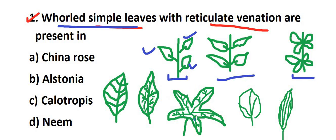Palmate venation has multiple main veins arising from the base, like the fingers of a hand. There are three or more main veins. Parallel venation means all veins run parallel to each other. So we need wool — simple leaves with reticulate venation.